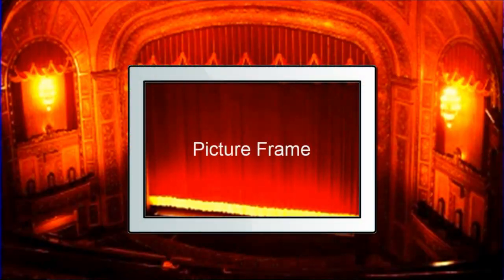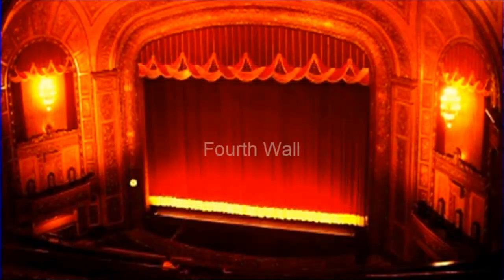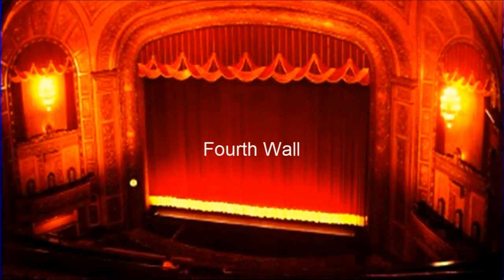The proscenium arch resembles a large picture frame through which the audience looks at the stage. If the action was to freeze, it should resemble a picture. The proscenium is also called the fourth wall, as the audience looks through the proscenium opening at the other three walls of a room.